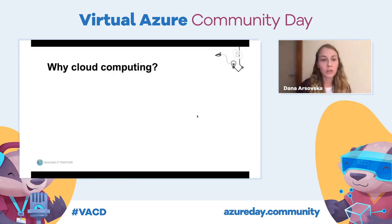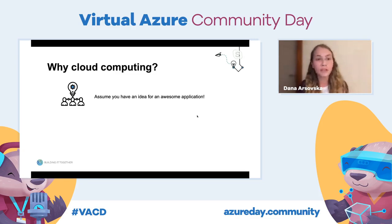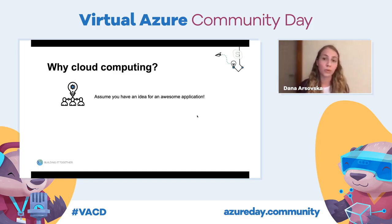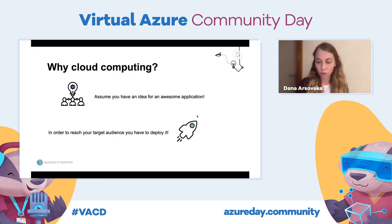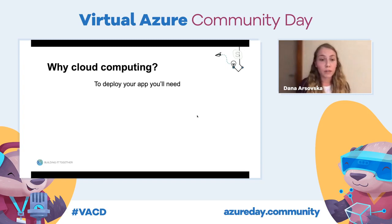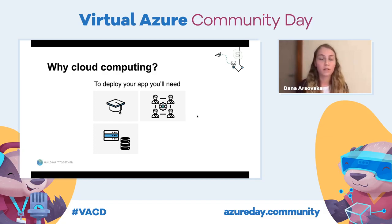Imagine you have an idea for an awesome application that will provide excellent user experience and generate a lot of profit. However, in order to reach your target audience and make people use it, you need to deploy it. To deploy an application, you need specialized knowledge, an appropriate developer group, and appropriate infrastructure — servers, databases, security, and so on. All of that hardware requires a lot of specialized knowledge, and there are many checkboxes to tick before you can deploy.